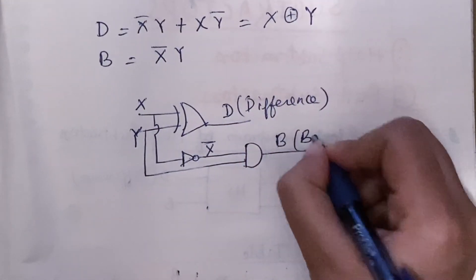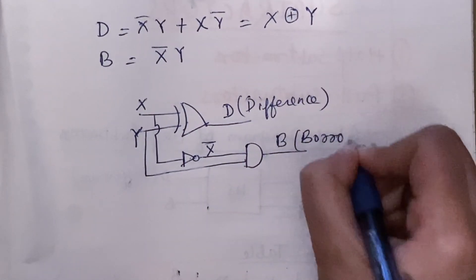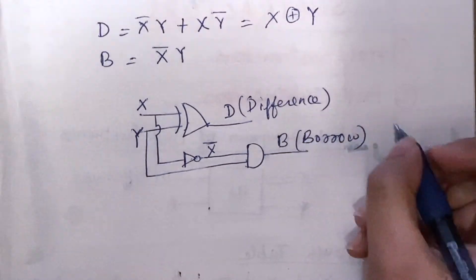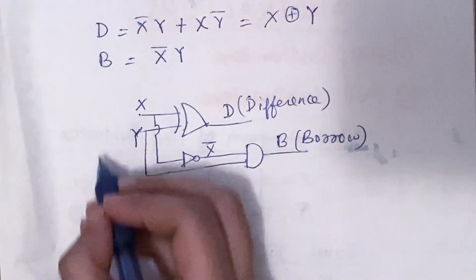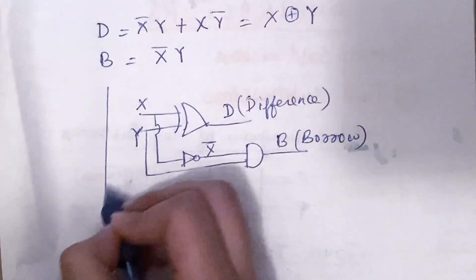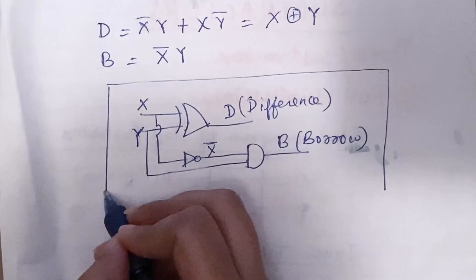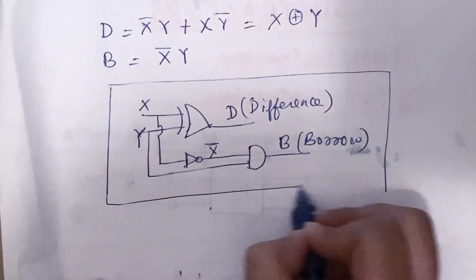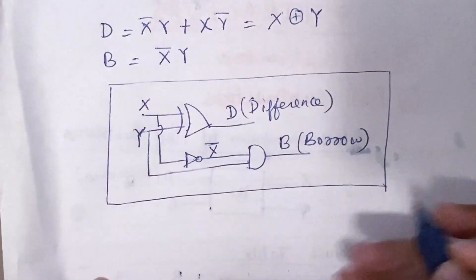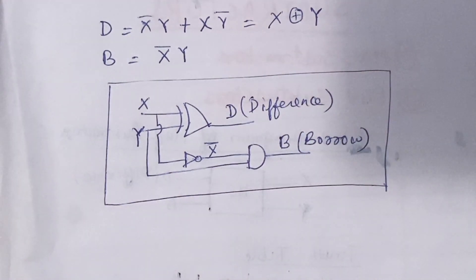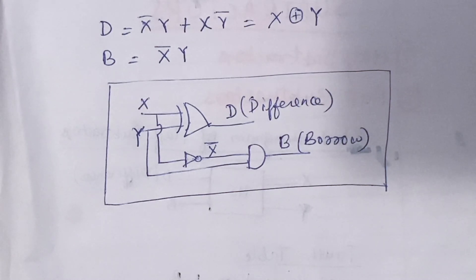So this is the circuit diagram for the half subtractor using logic gates. Hope the concept is clear. If you liked the video, please share it with your friends and subscribe to my channel.